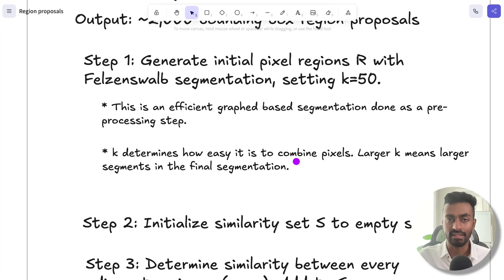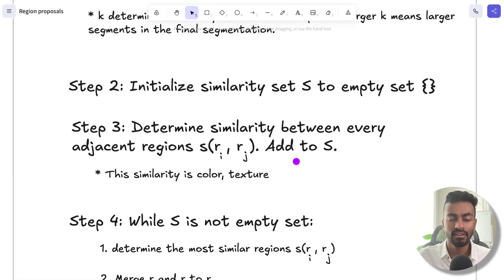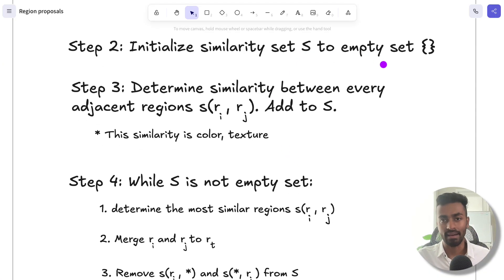Now, once we generate this initial segmentation, we're going to initialize a similarity set to be an empty set. And then what we do is we determine the similarity between every adjacent region, Ri and Rj, and then add it to S. And by similarity, we can give a score to how similar two adjacent regions are in color or in texture.